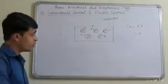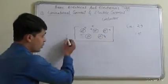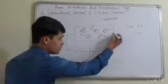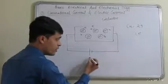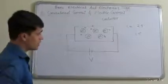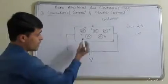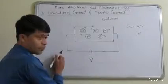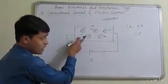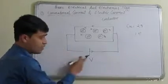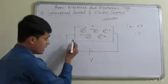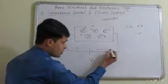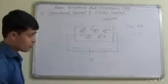When we connect one voltage source across the conductor — likewise, having the voltage source V — we know that electrons have a negative charge. Therefore, these negative charge electrons are attracted towards the positive charge. This is the direction of the electrons.